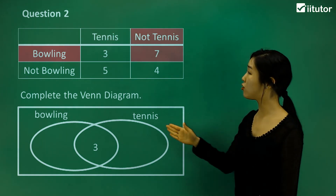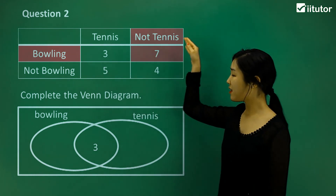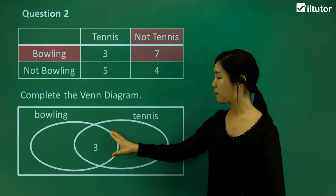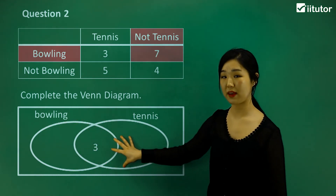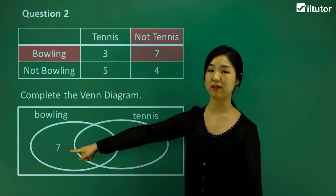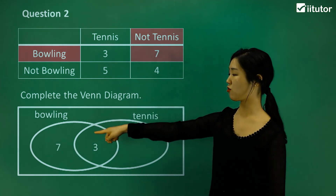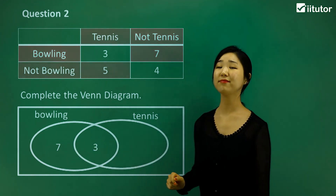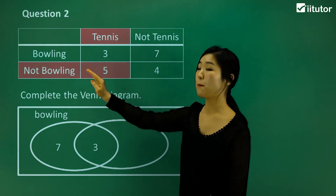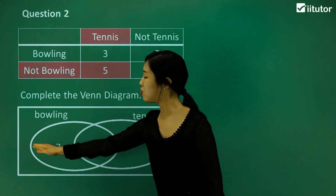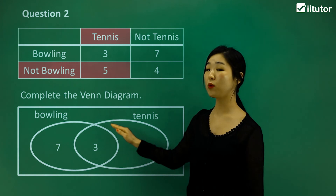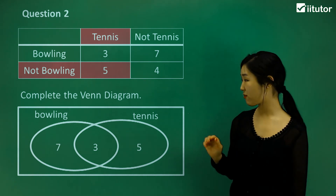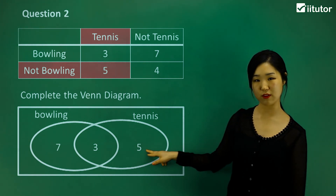Next, those who don't do tennis but do bowling — if they don't do tennis, it should not be in the tennis circle at all. The only part of the bowling circle not overlapping with tennis gives us seven, so the seven goes right into that section. Those seven people don't do tennis but still do bowling. Then, those who do tennis but not bowling should be in the tennis circle only. The five people go into that section of the Venn diagram.